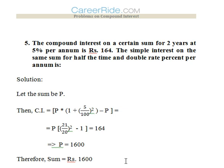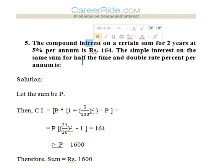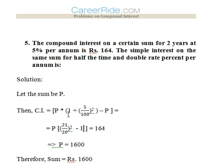Fifth question: Compound interest on a certain sum for 2 years at 5% per annum is Rs. 164. The simple interest on the same sum for half the time and double the rate percent per annum is? We assume the principal to be P. Equating: 164 = P × [(1 + 5/100)² − 1]. Solving this equation, we get P = Rs. 1600.